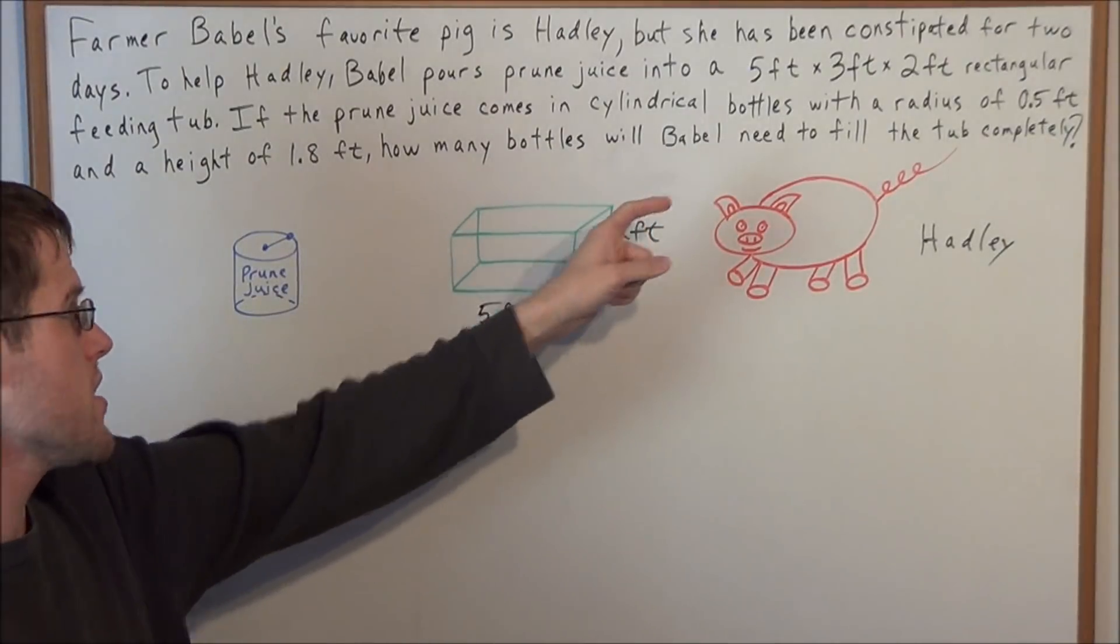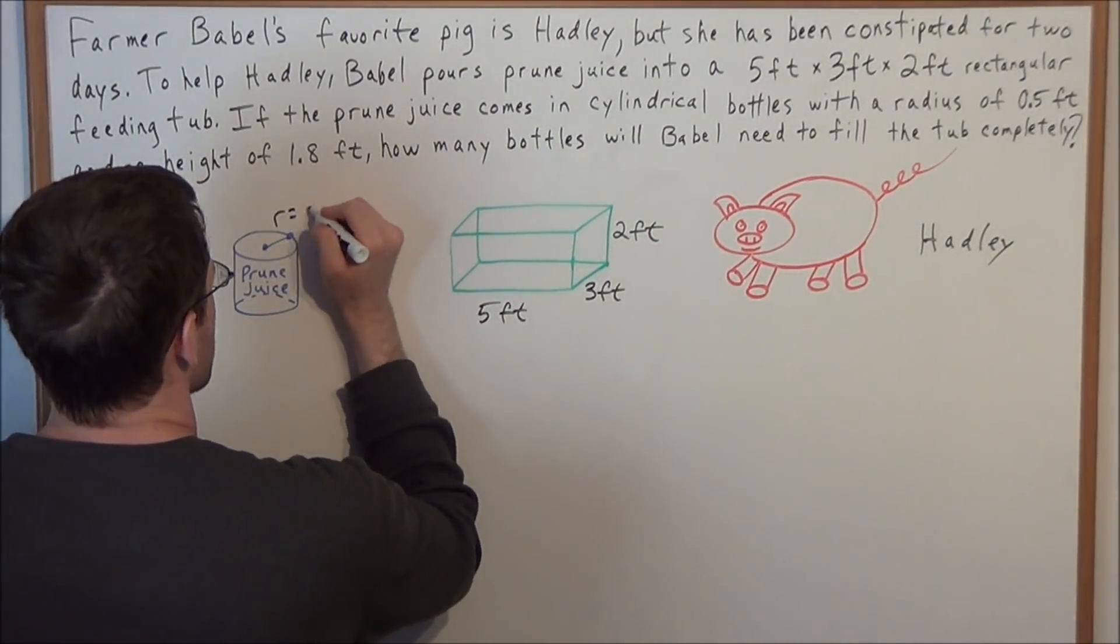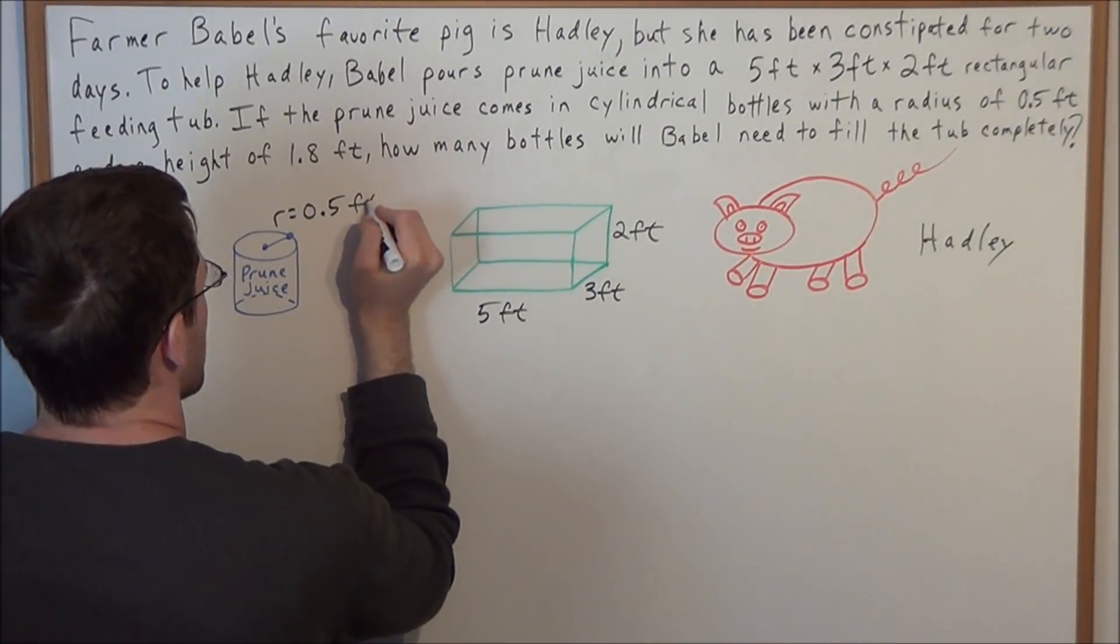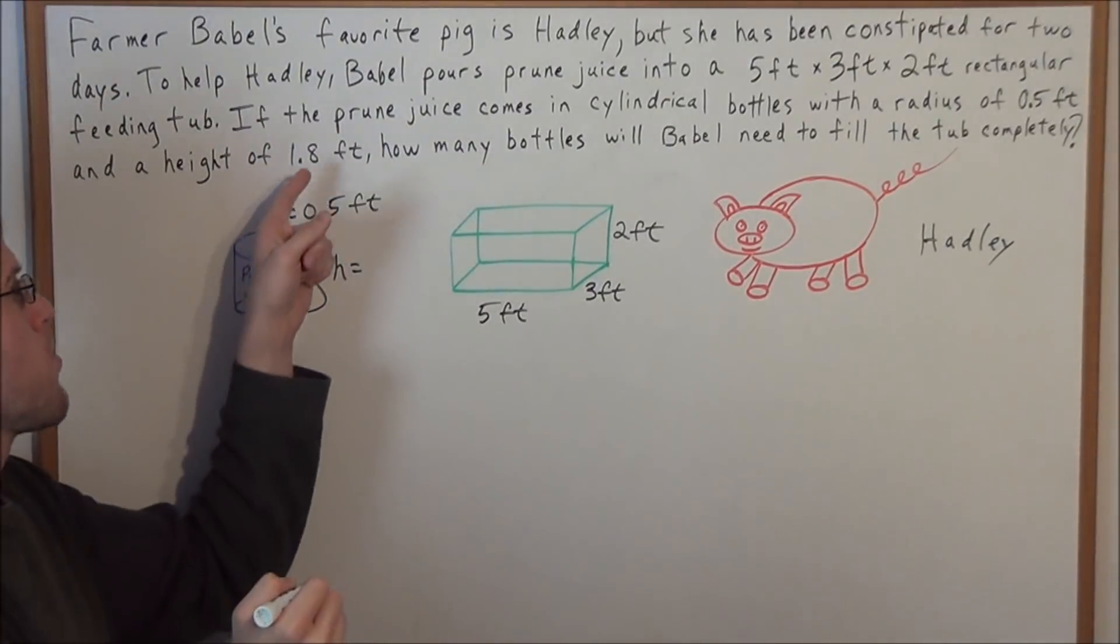Next, we were given that the radius of the cylindrical bottles, they all have a radius of 0.5 feet, and each of these bottles have a height of 1.8 feet.